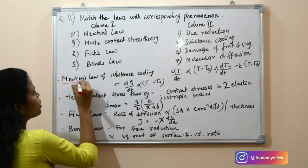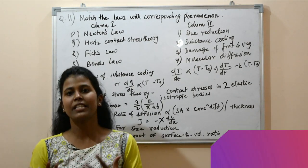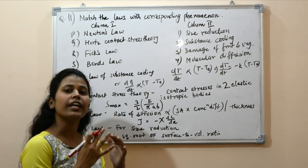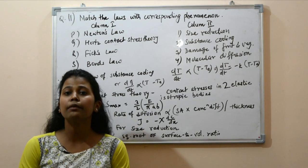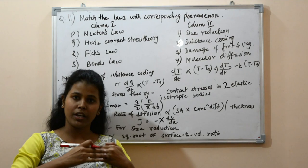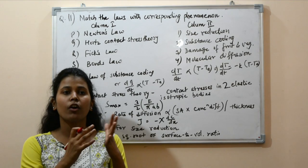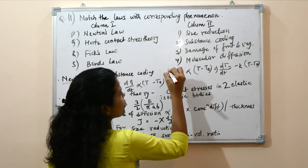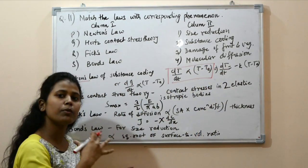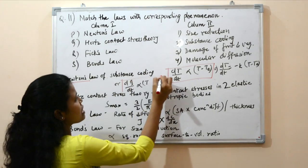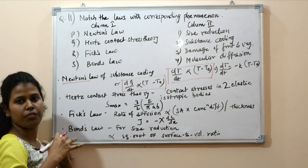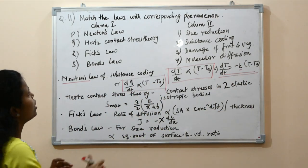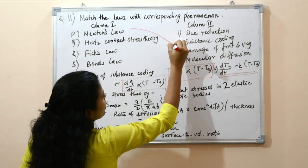First is Newton's law. Newton's law of cooling talks about the change in temperature of a substance. It states that the rate of change of temperature of a body is proportional to the difference in temperature between the body and the surrounding — that is, the heat loss is proportional to the temperature difference. This is the proportionality constant.